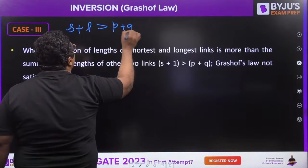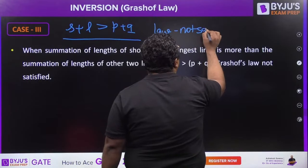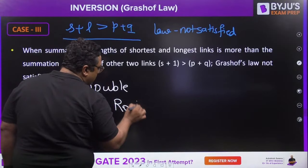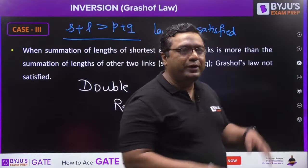For case 3, when s + l is greater than p + q, Grashof's law is not satisfied. In this situation, no matter which link is fixed, you will always get double rocker. Grashof does not guarantee any crank here.